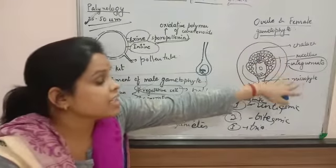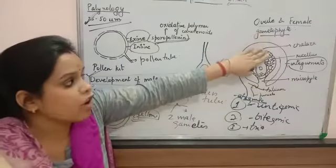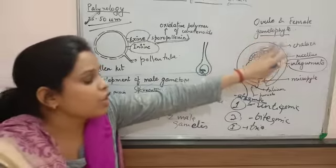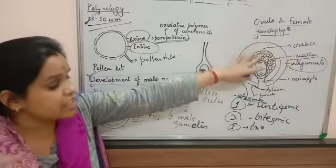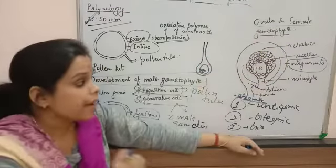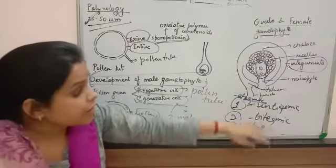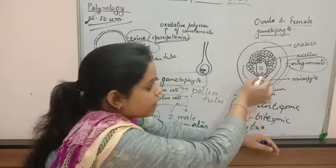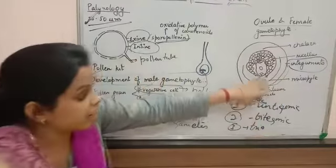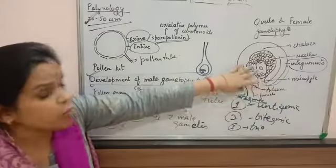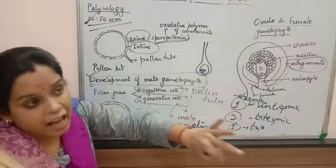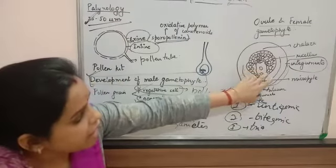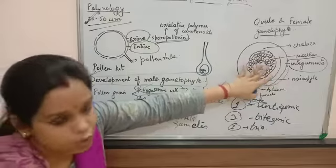The place where these integuments are fused is called chalaza. Just opposite to the chalaza, there is a micropyle. The micropyle is used for the pollen tube to enter inside, so that the male gametes can travel through the pollen tube and fuse.